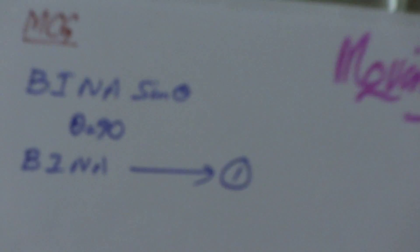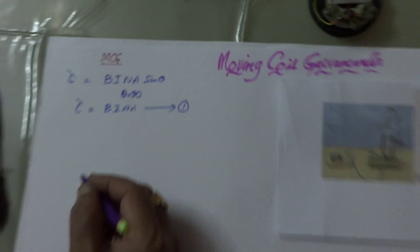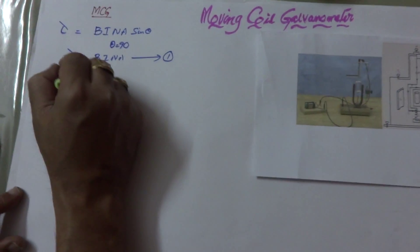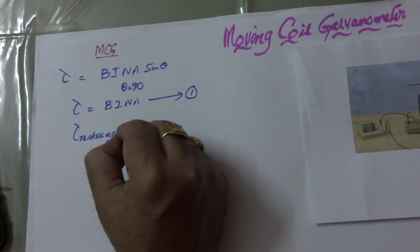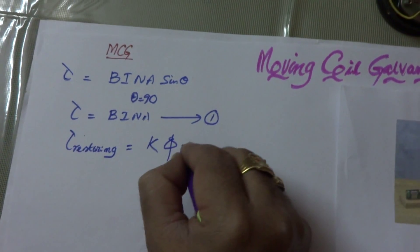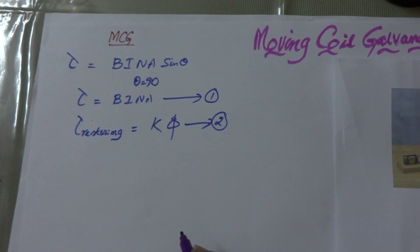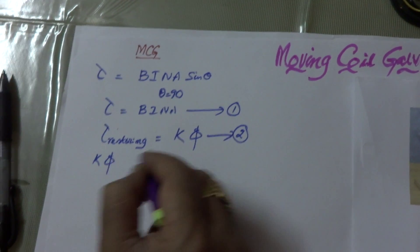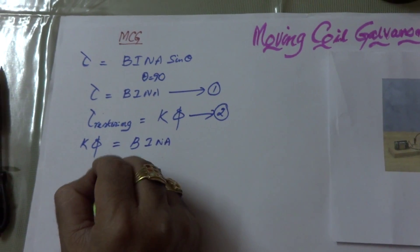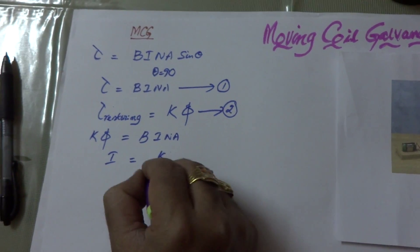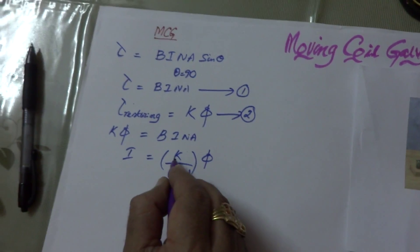The spring provides the restoring torque, which can be written as: restoring torque is equal to K times phi. This is the second equation. Now when the coil is under equilibrium, K phi is equal to B I N A. Therefore, I is equal to K divided by B N A, times phi. Here K is the torsional constant.